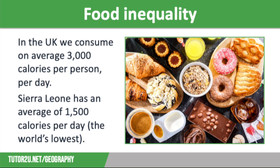Looking at inequality in terms of food: in the UK, on average, we consume over 3,000 calories a day per person, despite men only needing 2,500 and women 2,000. Whereas Sierra Leone has the world's lowest calorie intake at 1,500 calories. Calorie intake is also affected by access to water, with many areas having climates that make growing food challenging. Countries with low calorie intake also have the highest levels of undernourishment.